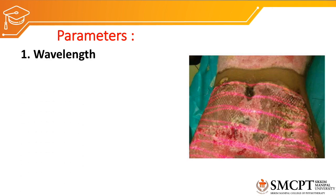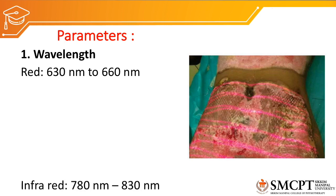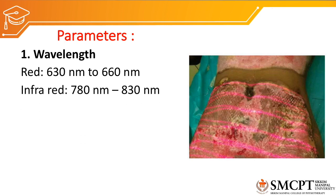The first parameter is wavelength. We have two types of laser based on wavelength: red visible light laser, ranging from 630 to 660 nanometers, and infrared laser, ranging from 780 to 830 nanometers. Depending upon the depth of the injury or wound, we select the type of laser. Red visible light penetrates approximately 1 centimeter depth, and infrared laser penetrates deeper, approximately 5 centimeters.